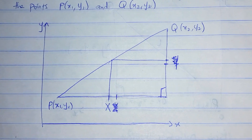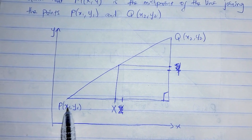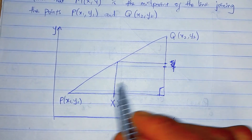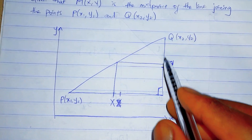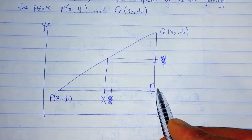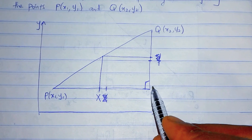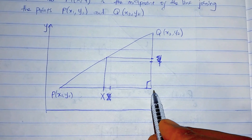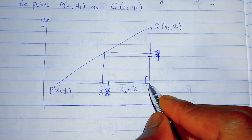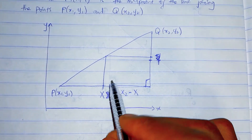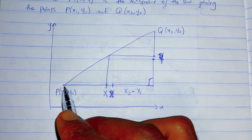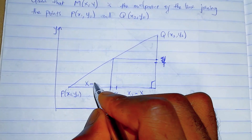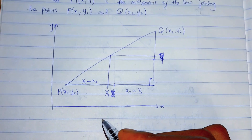Now let's get our formula. Remember this is (x1, y1) and this is (x2, y2). In literal form, this is where x2 is, x1 is here. If you are familiar with graphs or slopes, it means that if this is x2 and this is x1, then x is in between. The distance from here to here becomes x2 minus x, and the distance from here to here is x minus x1.